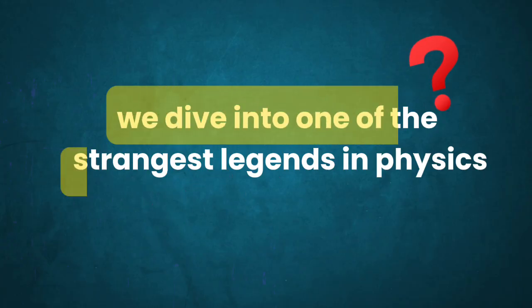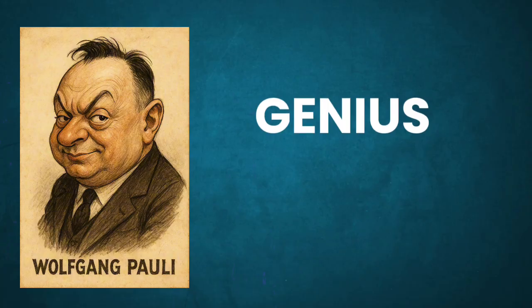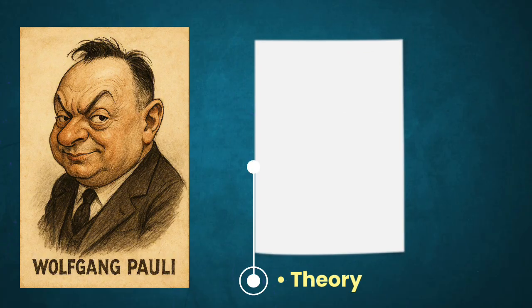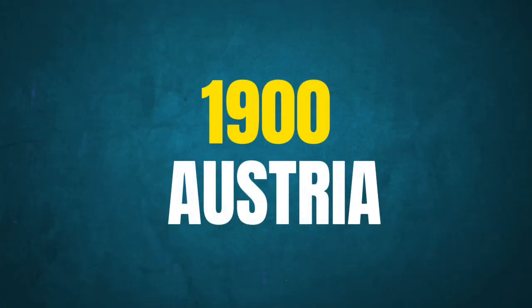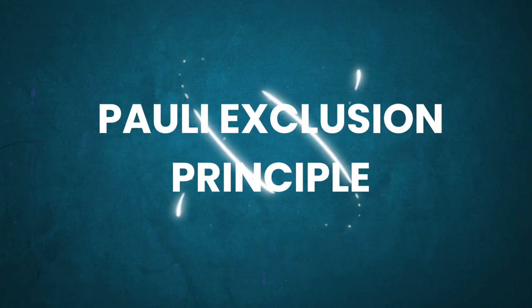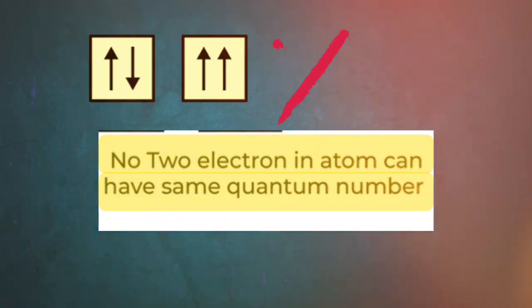we dive into one of the strangest legends in physics, where brilliant science meets bizarre superstition. Wolfgang Pauli was a genius, the kind of mind that could tear apart your theory in seconds. Born in 1900 in Austria, Pauli gave us the Pauli exclusion principle, the idea that no two electrons can occupy the same quantum state.